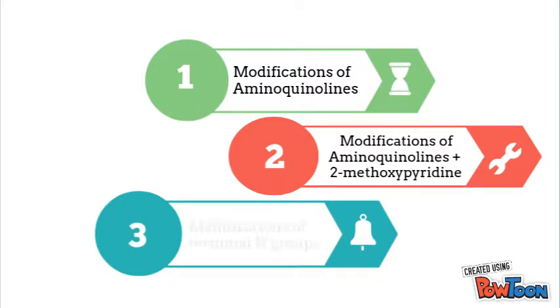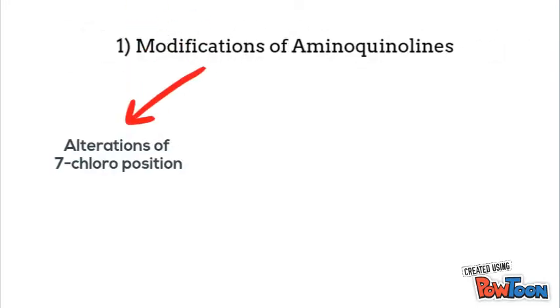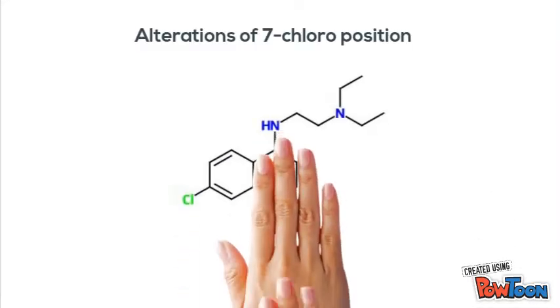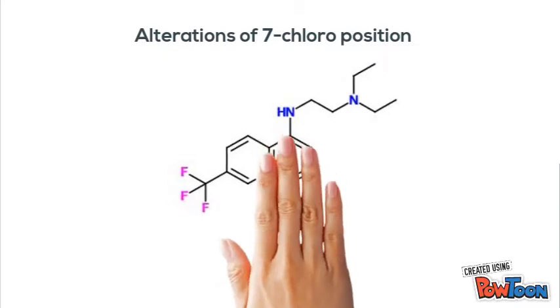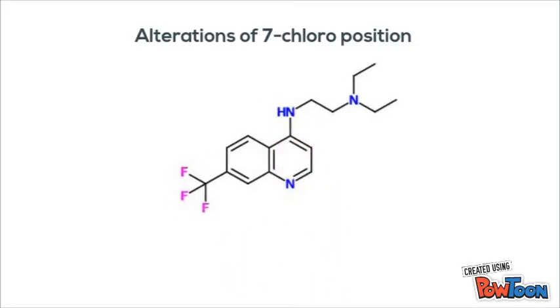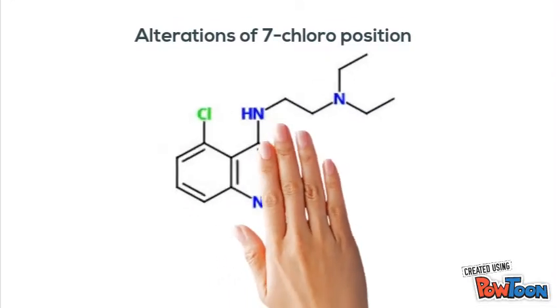And the third one is by using different terminal N groups. In terms of the modification of aminoquinolins, we tried to alter the 7-chloroposition by changing the chlorine atom to fluorine, bromine, and trifluoromethyl group. We even tried to change the chlorine position from the 7th position to the 6th, 8th, and 9th position.